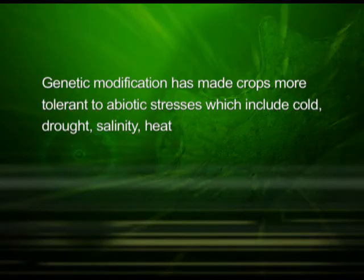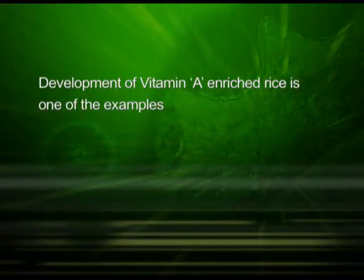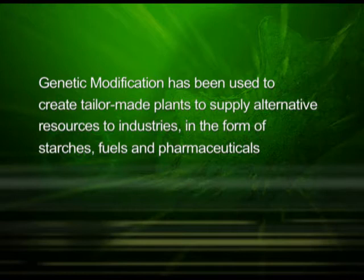GM plants have been useful in many ways. Genetic modification has made crops more tolerant to abiotic stresses which include cold, drought, salinity, heat, etc. Genetic modification reduced reliance on chemical pesticides through the development of pest resistant crops. It helped to reduce post harvest losses. Genetic modification increased efficiency of mineral usage by plants, which prevents early exhaustion of fertility of soil. It enhanced nutritional value of food — development of vitamin A enriched rice is one of the examples. Genetic modification has also been used to create tailor-made plants to supply alternative resources to industries in the form of starches, fuels and pharmaceuticals.